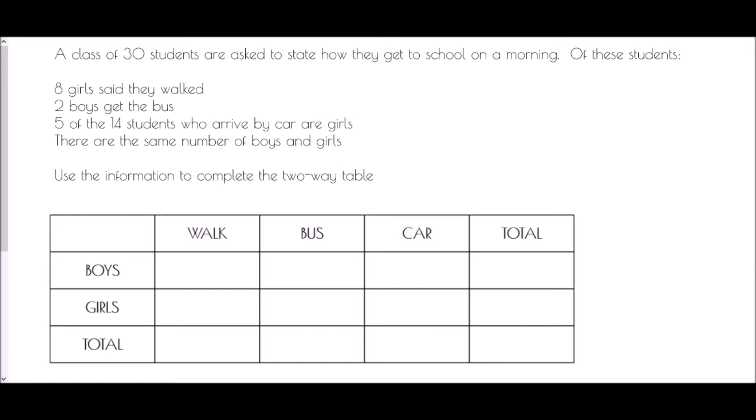That is the reason for a two-way table: when a group of people have been separated into categories, we need to place them in a table to find out how many are in each individual group. In this case, a class of 30 students are asked to state how they get to school. Eight girls said they walked, two boys get the bus, five of the 14 students who arrive by car are girls, and there are the same number of boys and girls. Use the information to complete the two-way table.